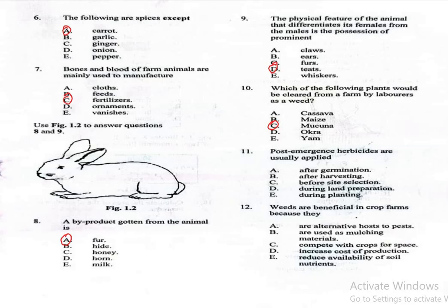Question 11. Post-emergence herbicides are usually applied: A. After germination, B. After harvesting, C. Before site selection, D. During land preparation, E. During planting. The correct answer is after germination, which is option A. Post-emergence herbicides target weeds that have already sprouted above the soil.